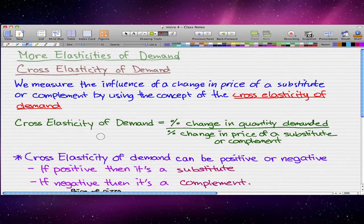The formula for the cross-elasticity of demand is pretty much the percentage change in quantity demanded over the percentage change in the price of a substitute or complement.